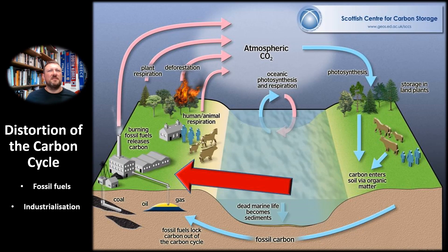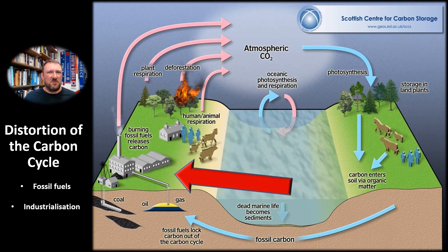Ordinarily, the carbon cycle exists in a dynamic equilibrium in concert with other geological and planetary processes. However, since the industrial revolution, human development powered by fossil fuel energy has distorted this natural equilibrium. The extraction and burning of carbon from oil, gas, and coal is not a natural process of the carbon cycle — it's distorting the carbon cycle. When we talk about climate change today, we're describing a process where human activity is driving atmospheric CO2 concentrations above and beyond natural variation at rates much faster than what you'd see over geological time.